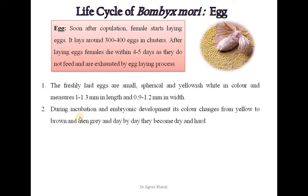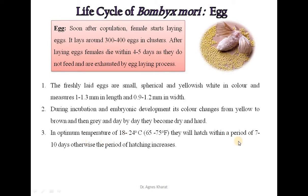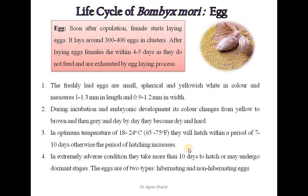During incubation and embryonic development, the egg colour changes from yellow to brown and then grey, and day by day they become dry and hard. At an optimum temperature of 18–24 degrees Celsius, they will hatch within 7–10 days; otherwise the hatching period increases. In extremely adverse conditions they may take more than 10 days to hatch or may undergo dormancy. The eggs are of two types: hibernating and non-hibernating eggs.